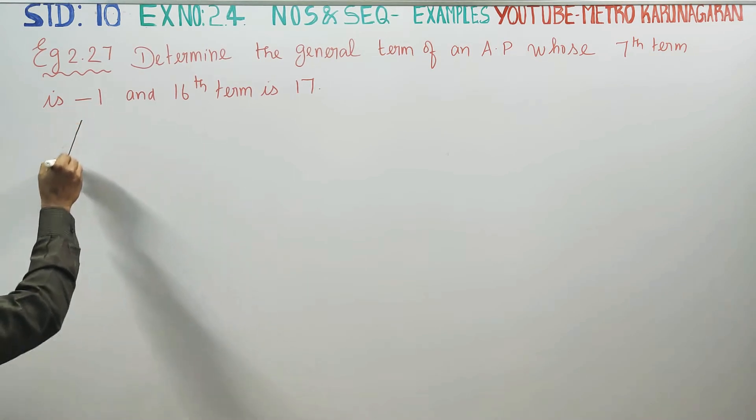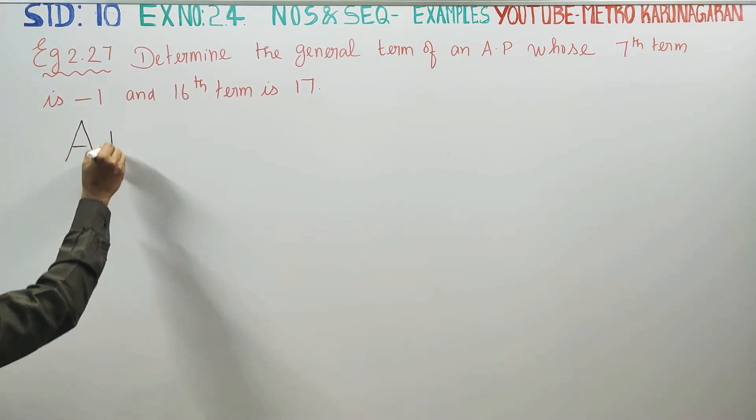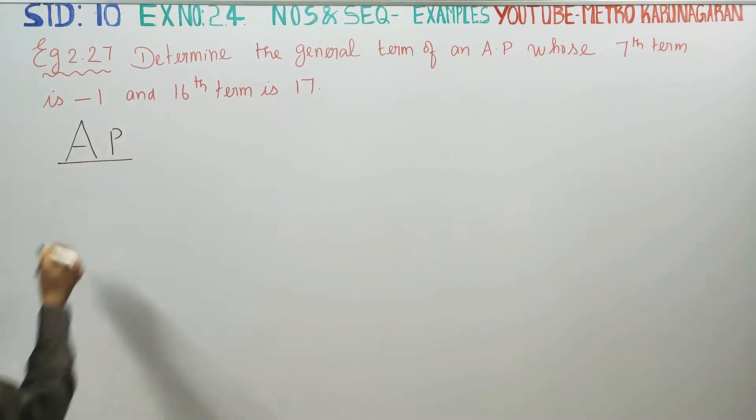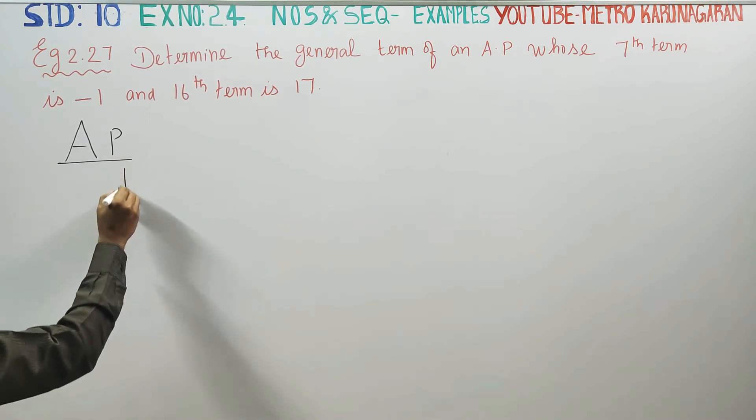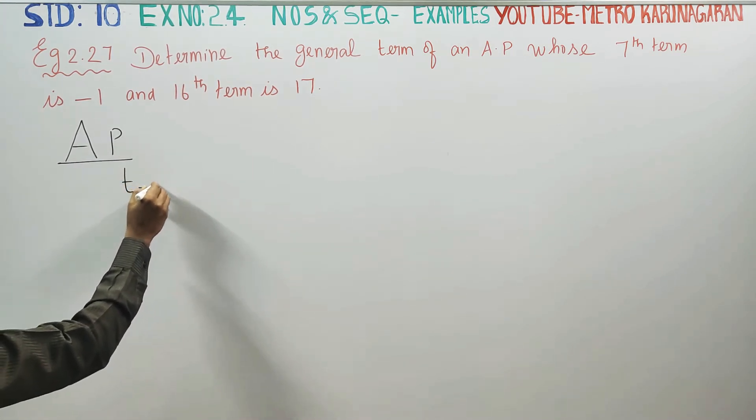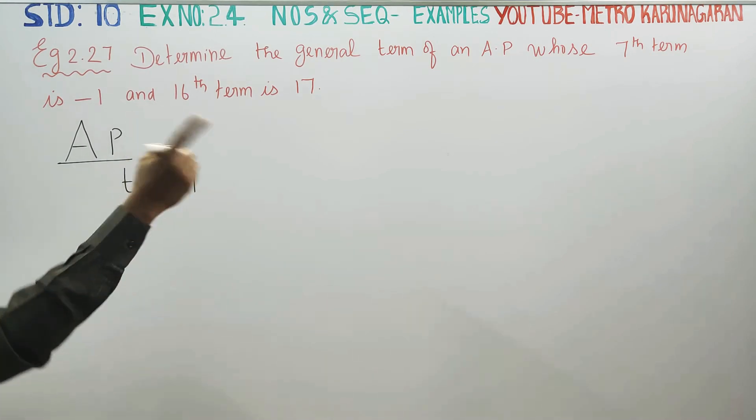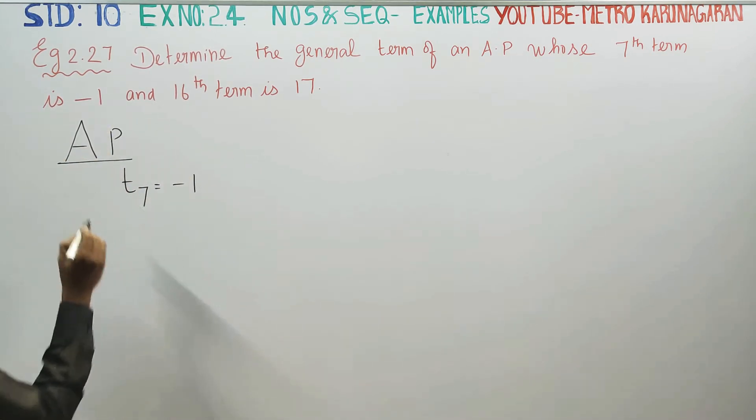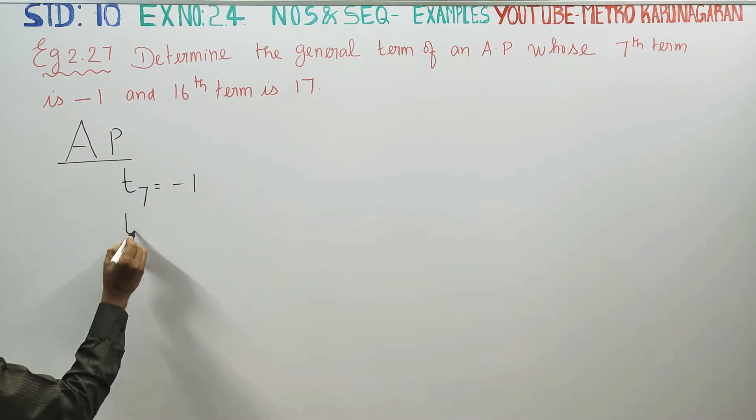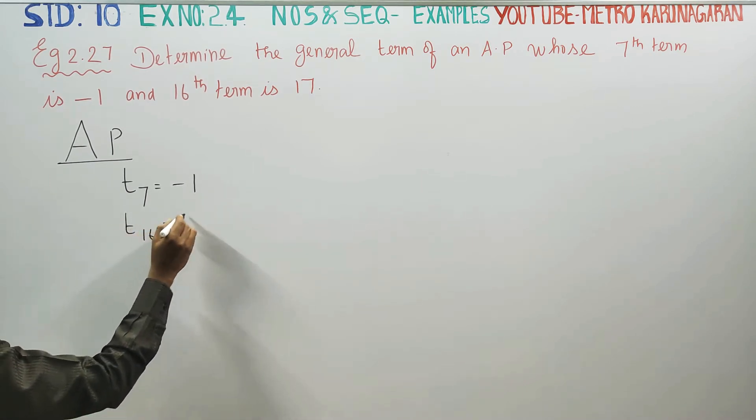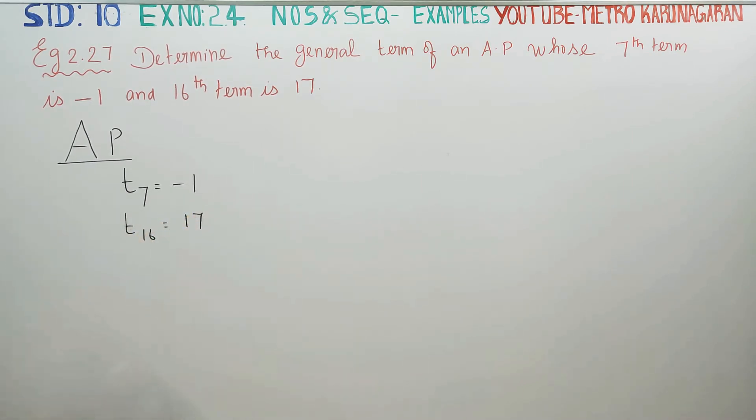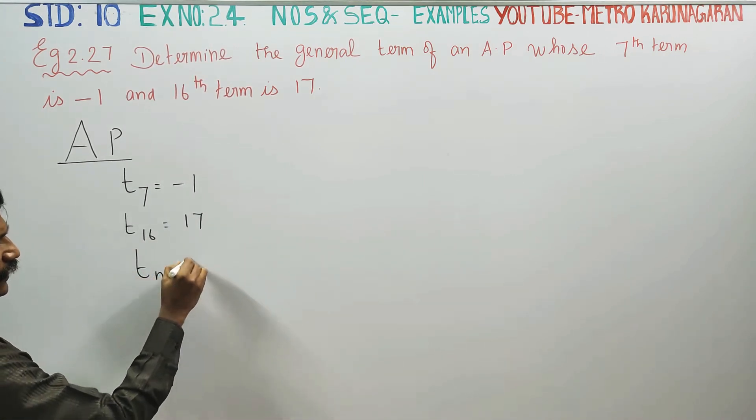It is given that it is an arithmetic progression. T7 is equal to minus 1, 16th term is 17. Find the general term, TN, this is the general term.